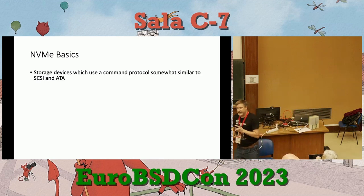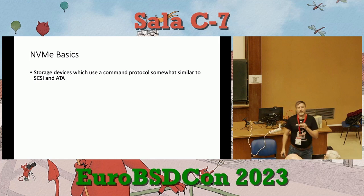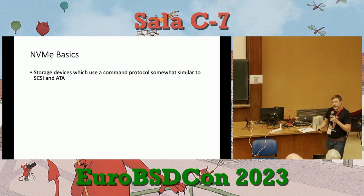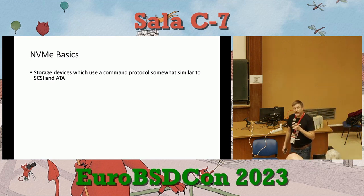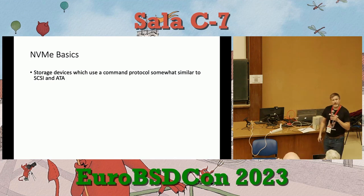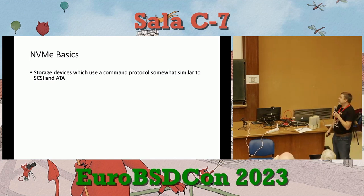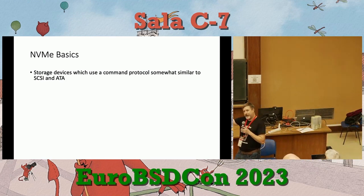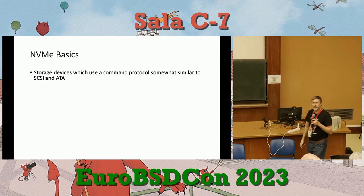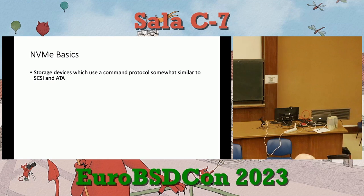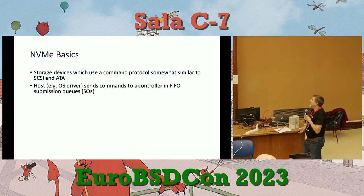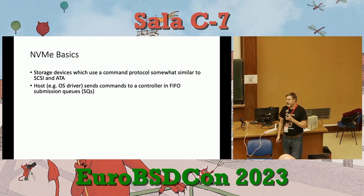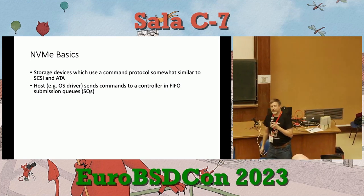NVMe, which is NVM Express, is a standard for managing non-volatile memory storage, primarily targeted at flash — though reading the NVMe 2.0 spec, there are extensions to handle spinning rust, which seems kind of odd. NVMe defines a protocol to issue commands to the controller, similar in nature to SCSI and ATA, except simpler — certainly simpler than SCSI. The terminology NVMe uses is, in some cases, gratuitously different from other storage things, so I'll try to explain their nomenclature.